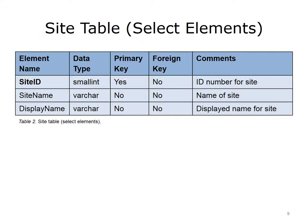This slide shows select elements from the site table. The site ID field, which is the primary key for the table, serves as a relationship between the patient table and the site table. The other two fields relate to the name of the site. One is the full name, and the other is the displayed name for the site in NUMI. This allows for a different variant of the name, for example an abbreviation, to be displayed within the NUMI application.